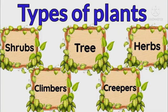First of all let me discuss the types of plants that we have. As you can see in the picture, different types of plants are there — shrubs are there, trees are there, herbs are there, climbers are there, creepers are there.